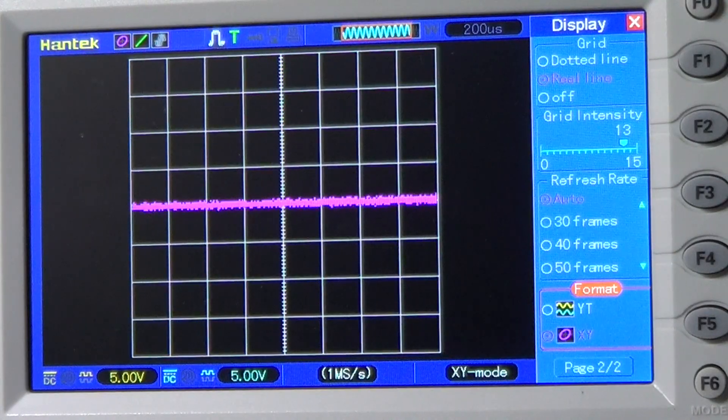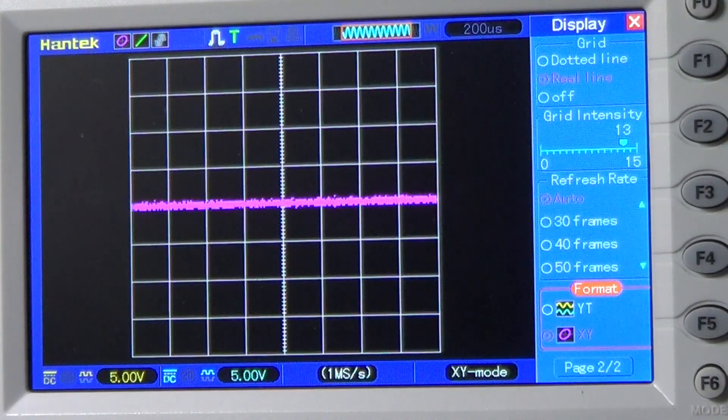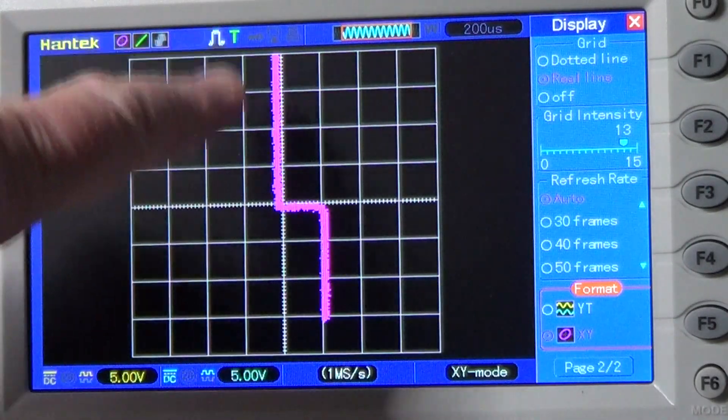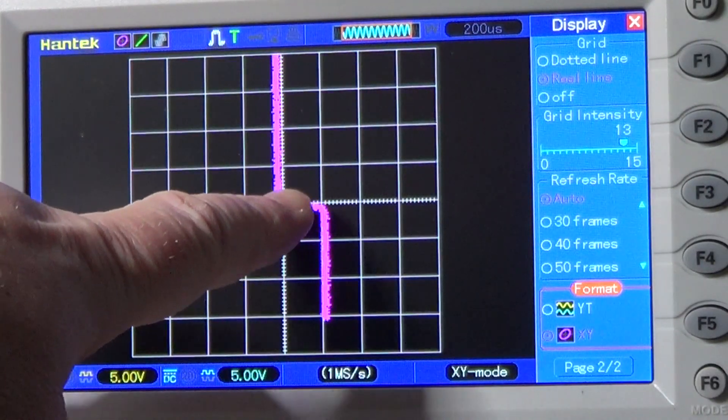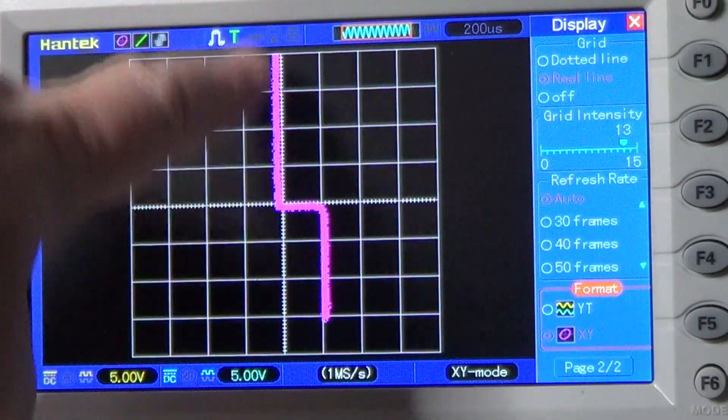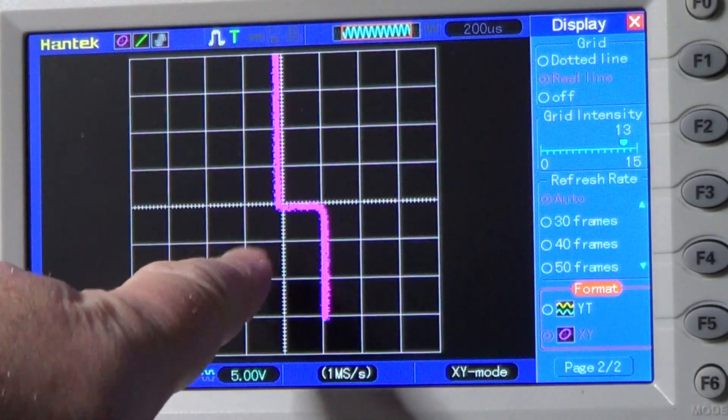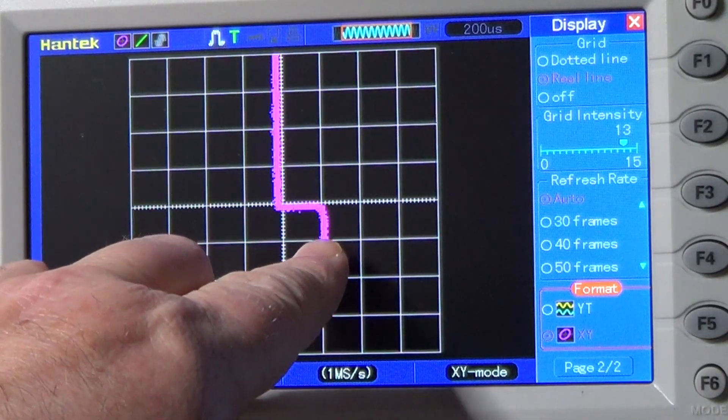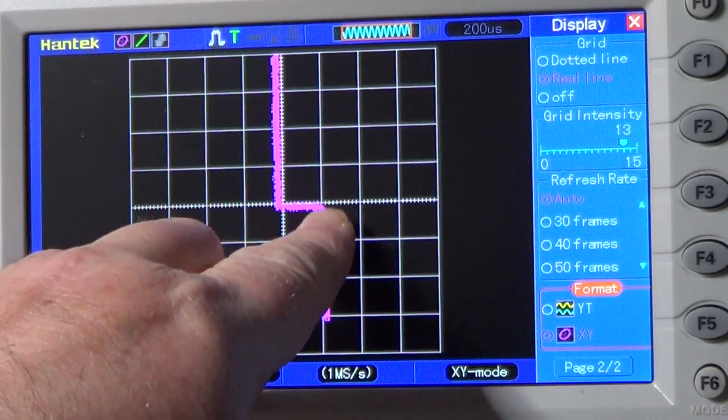Let's now try with a Zener diode. And you can see that for direct polarization, it behaves like a normal diode. But when inversely polarized, as soon as the voltage exceeds the Zener voltage, in this case 5.1V, the current starts flowing liberally, limited only by the series resistor.